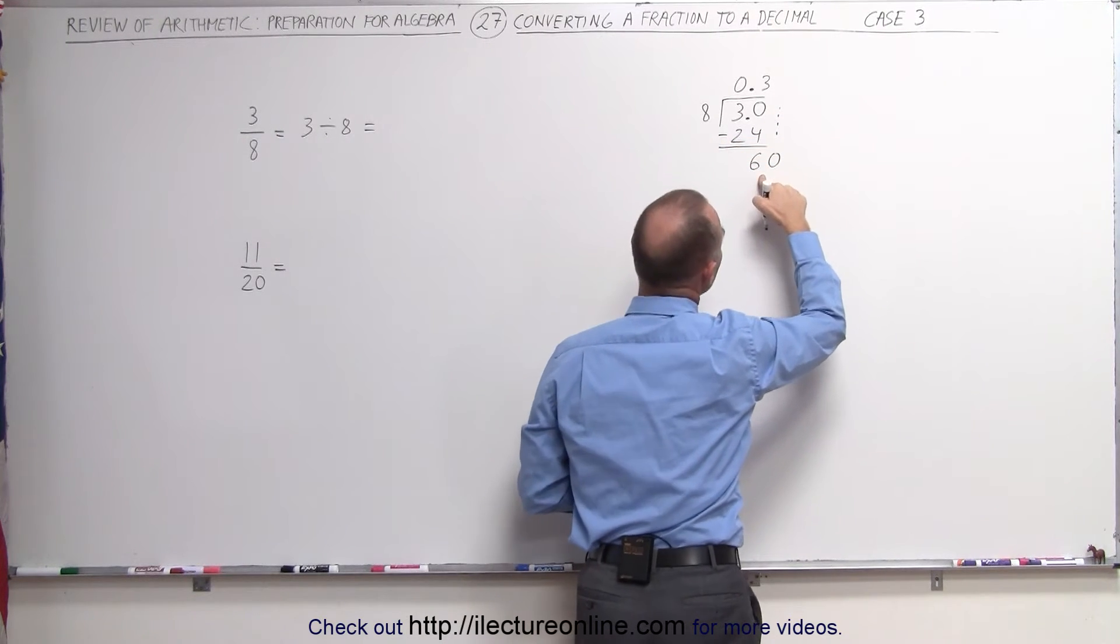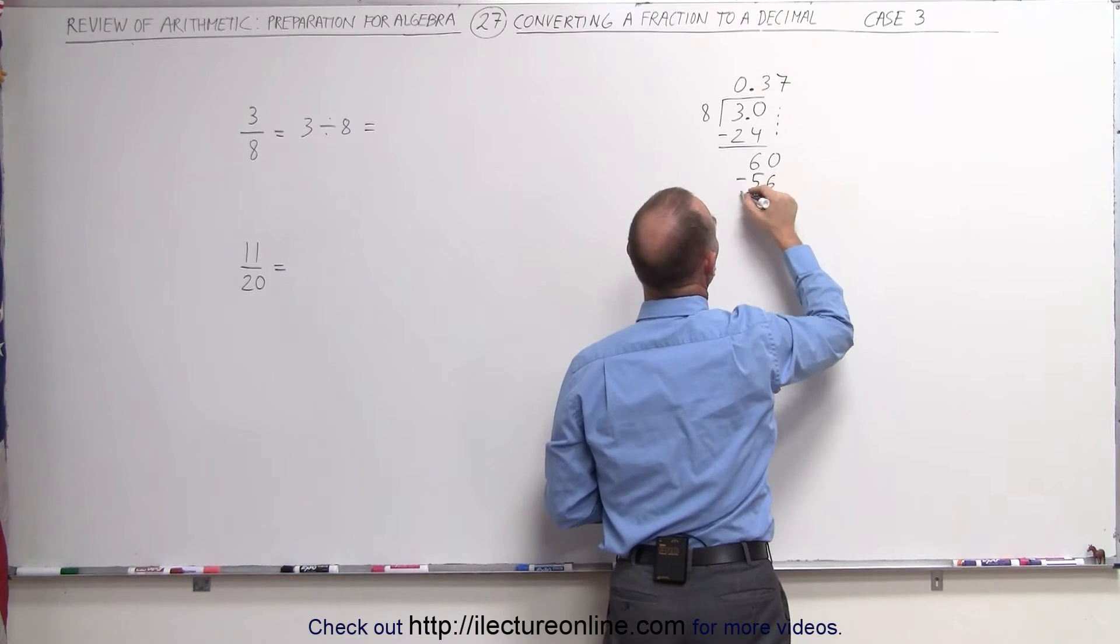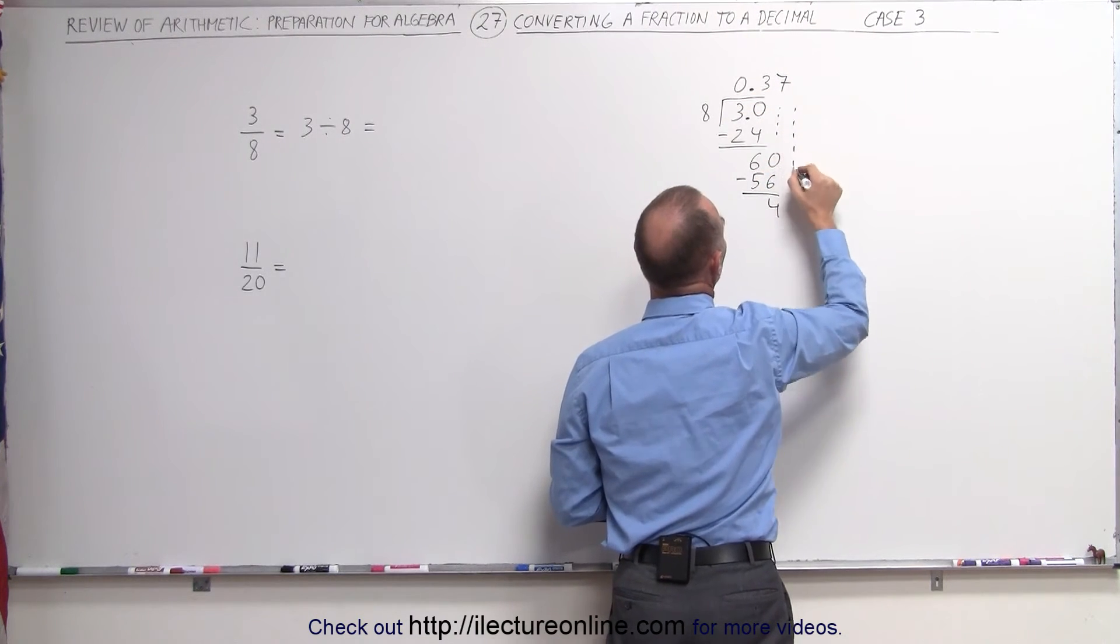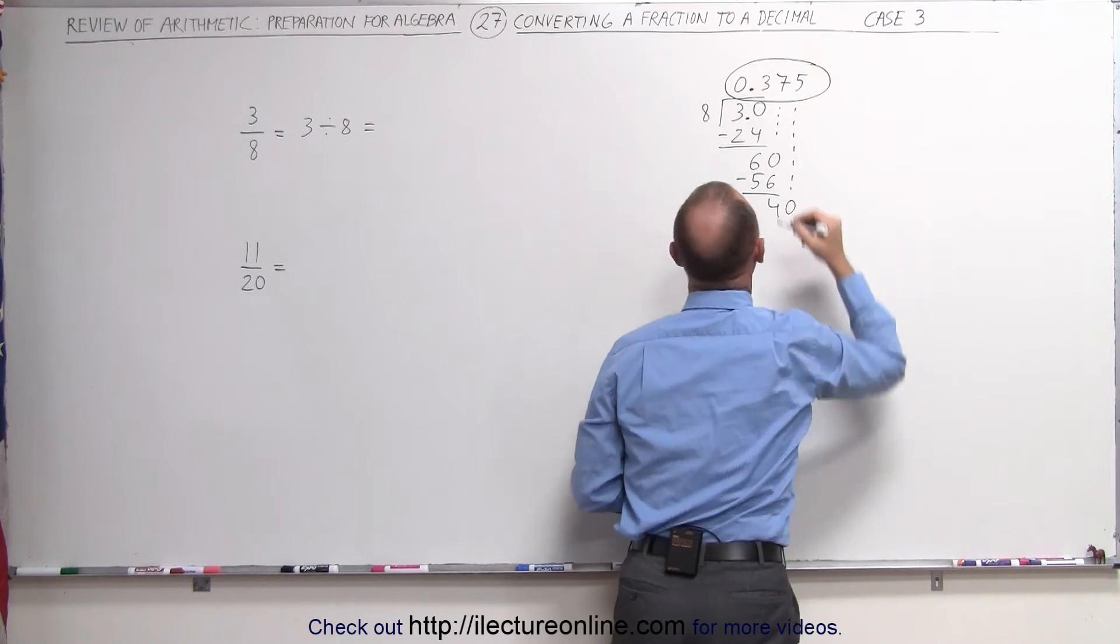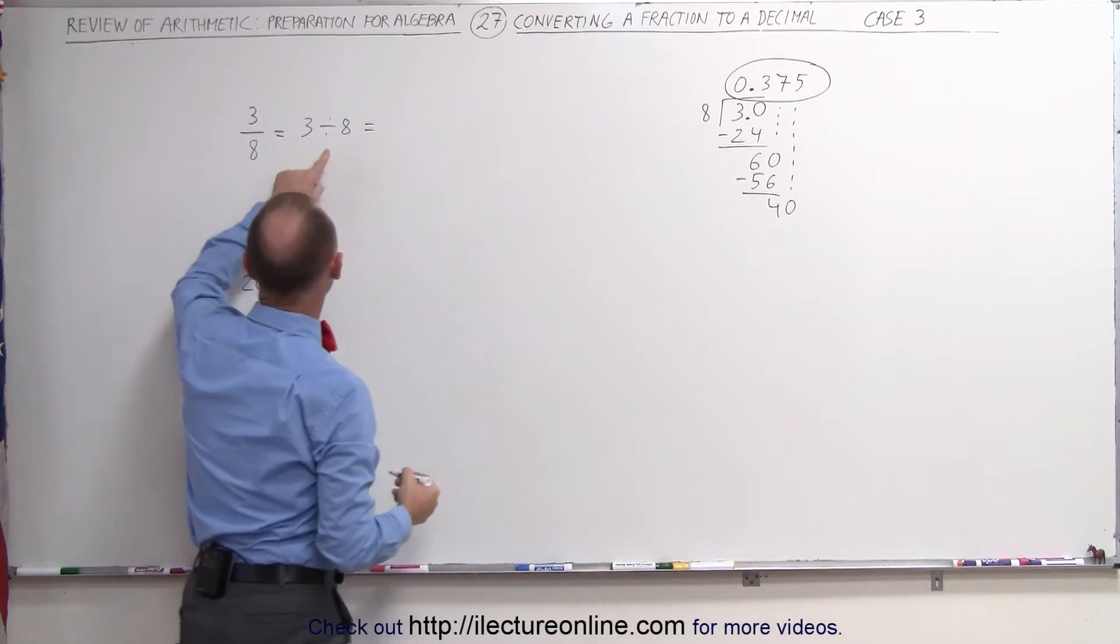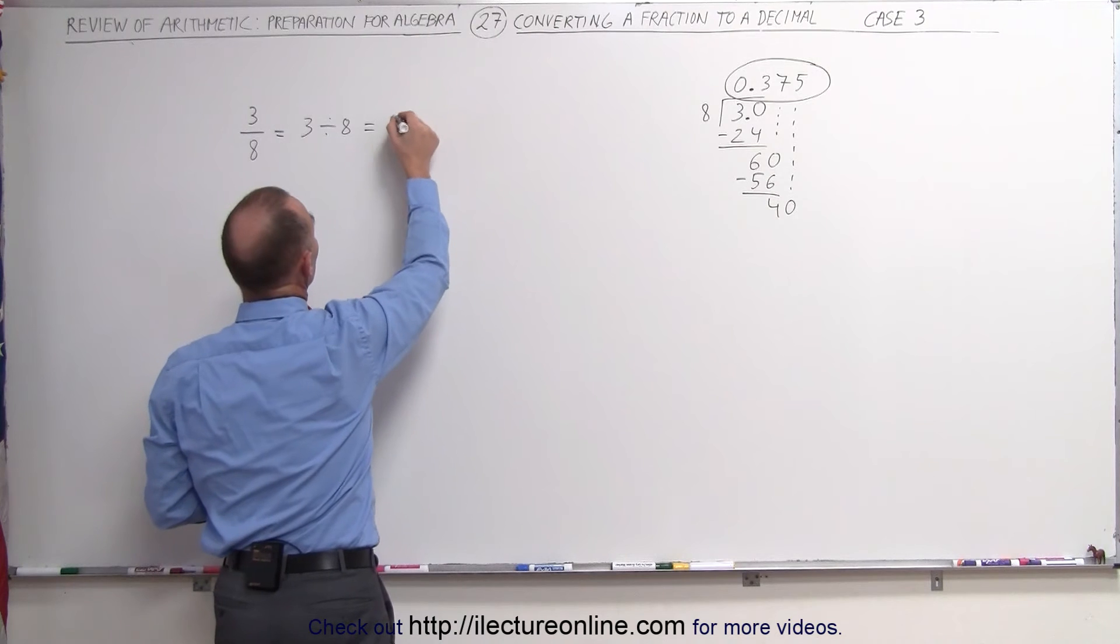Drop down the next 0. 8 goes into 60, that would be 7 times. 7 times 8 is 56, remainder is 4. Drop down the next 0. 8 goes into 40, 5 times, and here's our answer. 3 divided by 8, which is the same as 3 eighths, can then be written as 0.375.